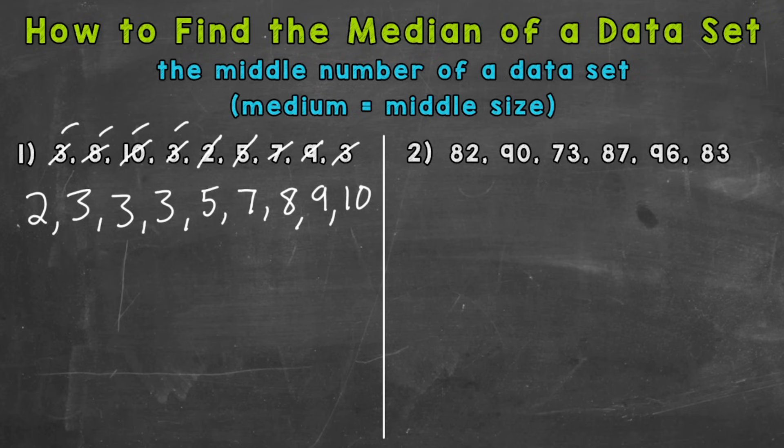So we have one, two, three, four, five, six, seven, eight, nine numbers in our original list. So that means we should have nine once we order them from least to greatest. If we don't have nine, something went wrong. So let's double check.